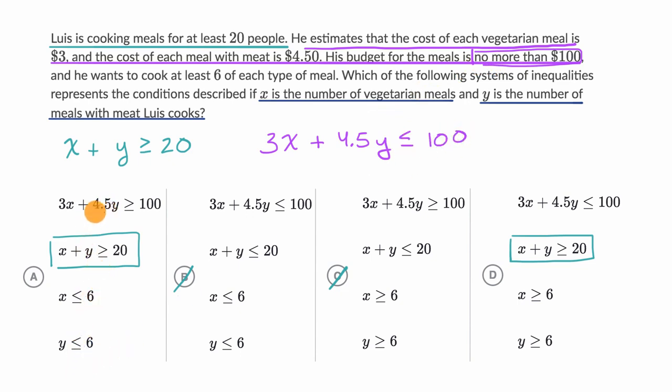And so let's see, we actually over here have 3X plus 4.5Y is greater than or equal to 100, so we can rule choice A out as well. And just by deductive reasoning, we see choice D does have that in there, but this must be the answer. But let's keep going to make sure that these other constraints work.